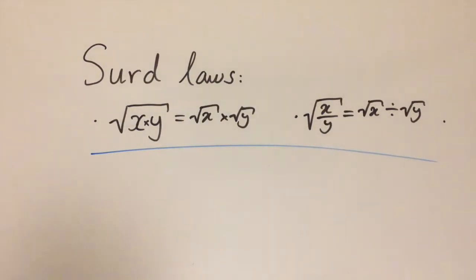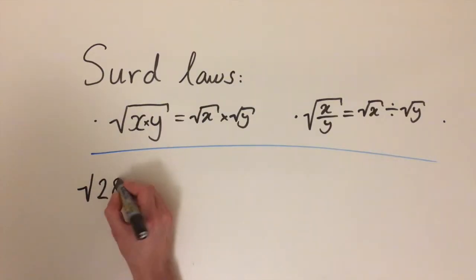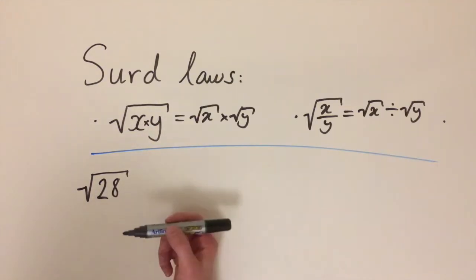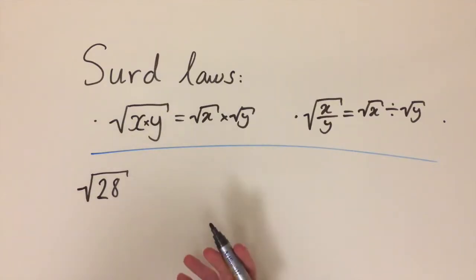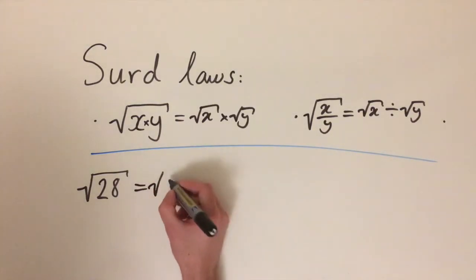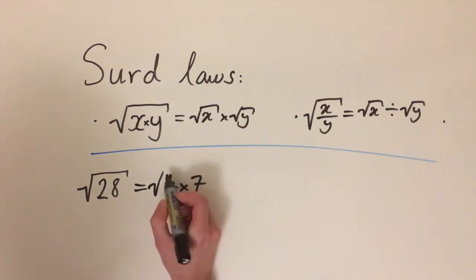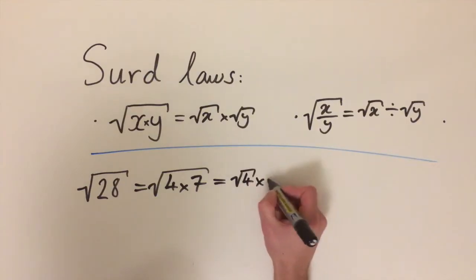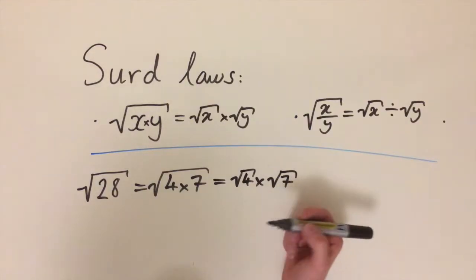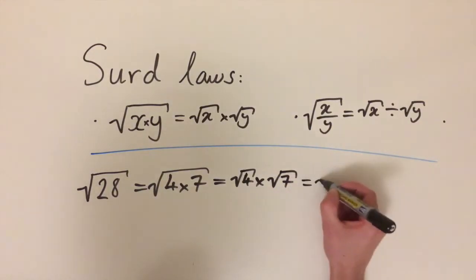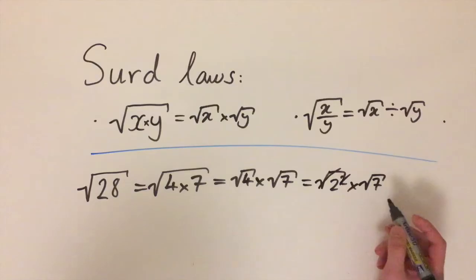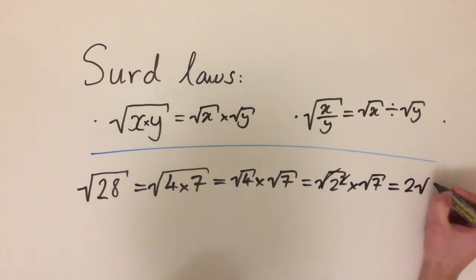As a first example, let's look at the square root of 28. We're going to simplify this by factorizing the number inside the root, writing 28 as a product involving a square number so that it cancels with the root. We can write 28 as 4 times 7. Using the law of multiplication, this is the square root of 4 times the square root of 7. Since 4 is 2 squared, the square root and the square cancel out, giving a simplest form of 2 times the square root of 7.